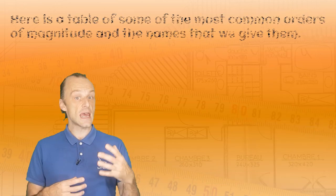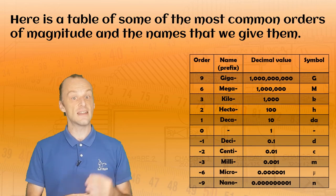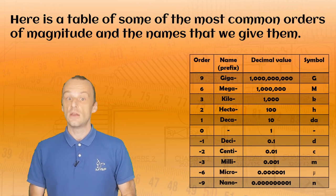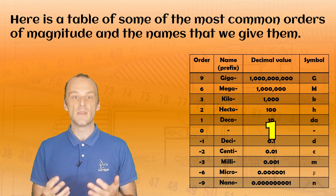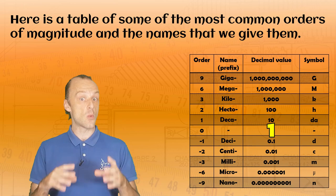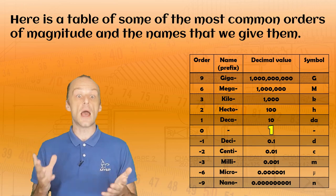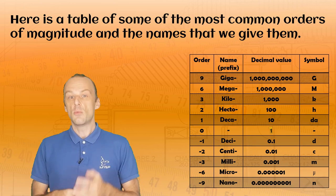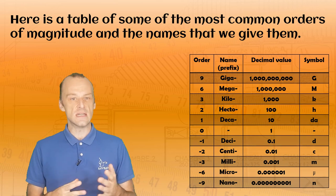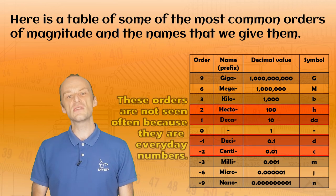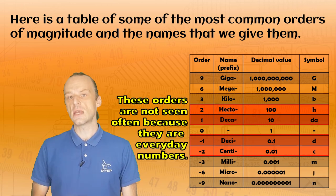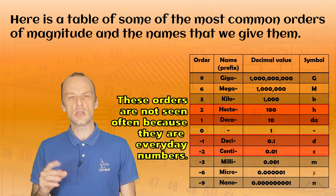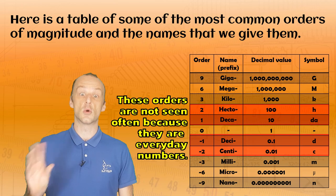Here is a table of some of the most common orders of magnitude and the names that we give them. You can see that in the middle row of the table is the number one. If we multiply something by one, then it does not get bigger or smaller. We do not see the lower orders near to one very often, because they are such small everyday numbers. We do use centimetres, but you won't usually hear about decimetres or decimetres.